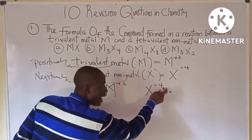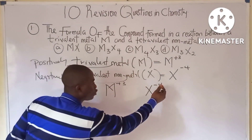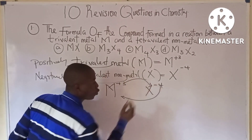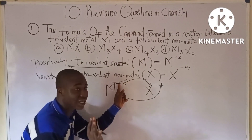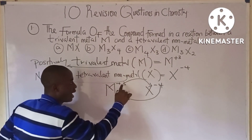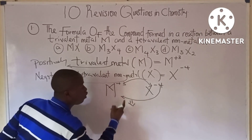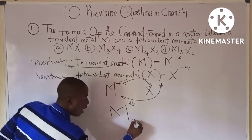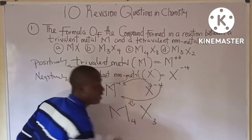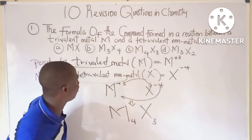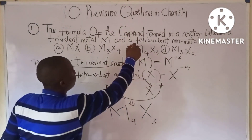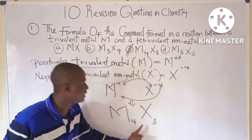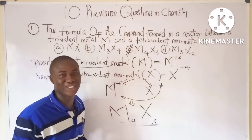When we exchange the charges, the 4 from X goes to M and the 3 from M goes to X. So the chemical formula becomes M4X3. The answer is option C, which is M4X3.